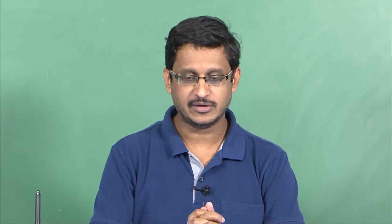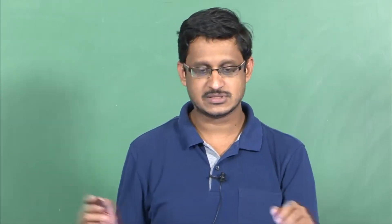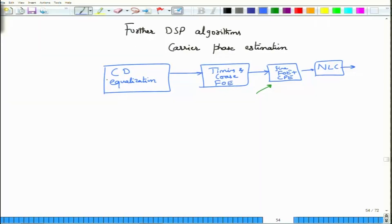As we have already motivated the DSP chain, you begin the first block by receiving the samples after coherent detection. The samples that you receive will be deskewed and aligned to make the in-phase and quadrature components align with respect to each other. And then you perform CD equalization, which is usually performed either in the time domain or in the frequency domain.